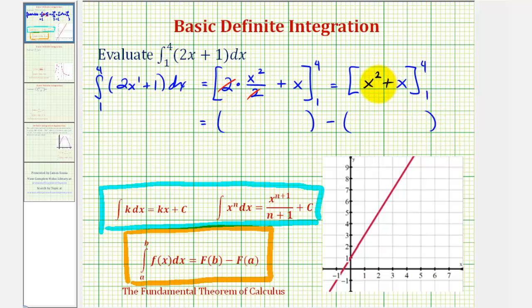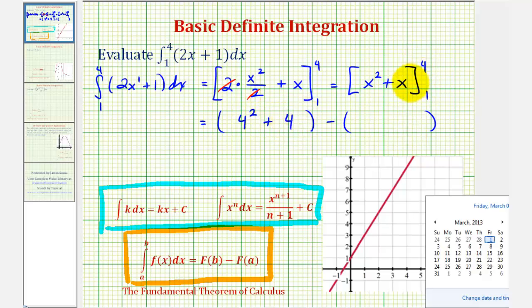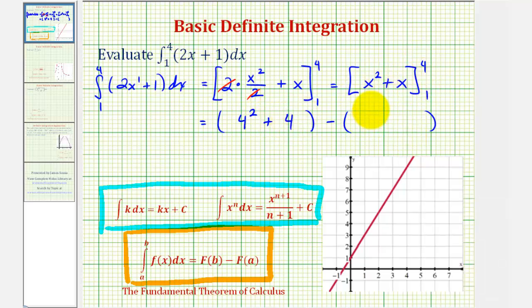So notice when X is four, we would have four squared plus four. When X is one, we would have one squared plus one. So here we'll have 16 plus four, that's 20, minus this would be two. So the definite integral is equal to 18.